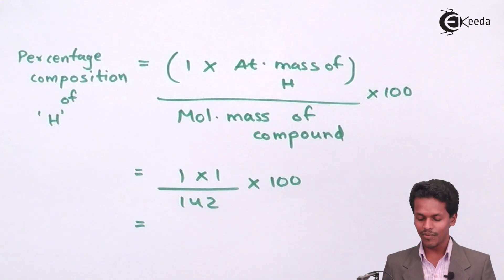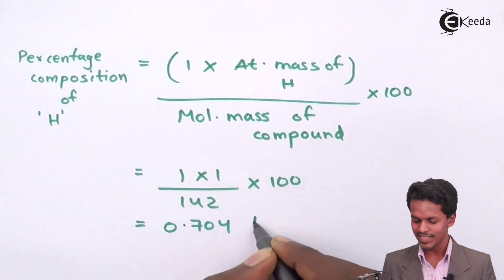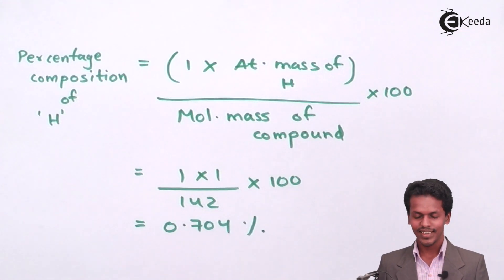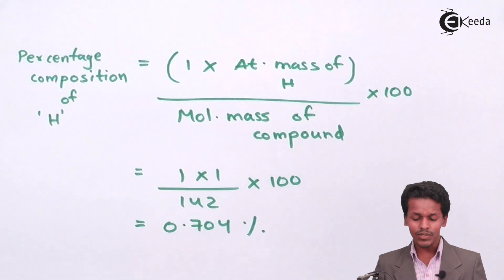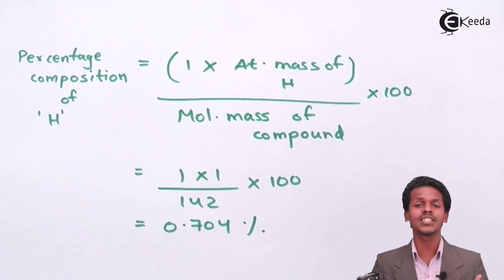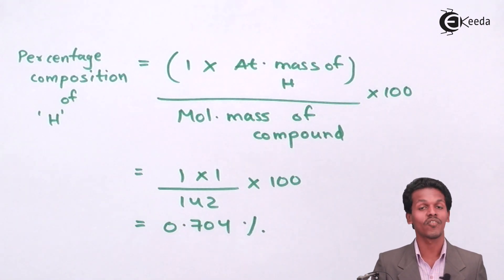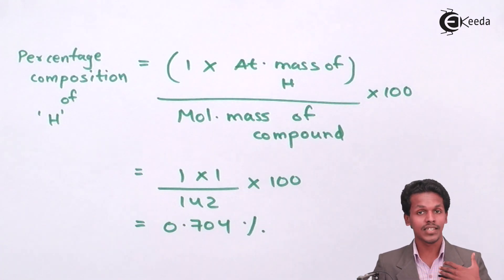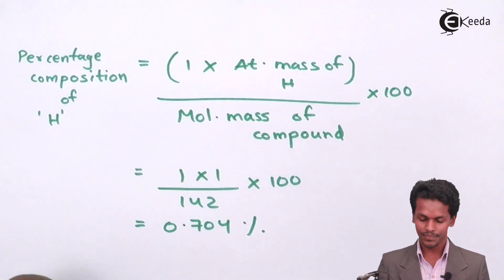The answer for hydrogen is 0.704%. This is a very similar calculation for estimating the percentage of elements present in a compound. Now let us move to the next element, phosphorus.